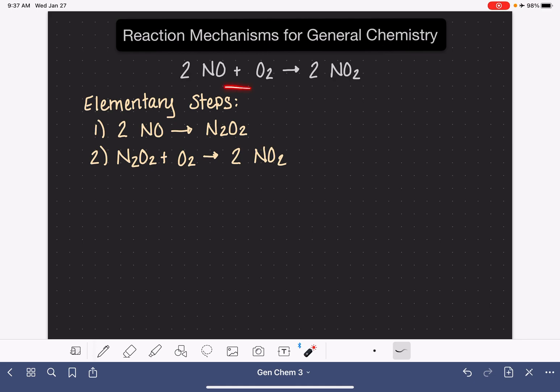So again, the balanced overall equation that we write usually isn't a description of exactly how the reaction proceeds. Typically, the reaction proceeds through a series of elementary steps or individual steps in the reaction. The elementary steps together are referred to as the reaction mechanism, an explanation of how the reaction actually takes place. If we add up the elementary steps with each other, they're going to add up to the overall chemical reaction.